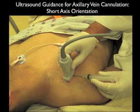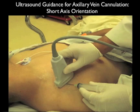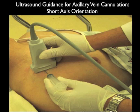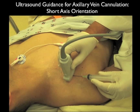Here are pictures showing the probe orientation for cannulation of the axillary vein in a short axis orientation. Notice the probe is in an up-and-down configuration with the indicator dot towards the patient's right shoulder or superior. We place the needle roughly at the midway point underneath the probe. A benefit of starting with the short axis orientation is that it helps orient the needle superiorly or inferiorly on the patient's chest wall to best aim it towards the axillary vein.